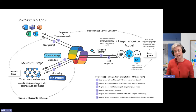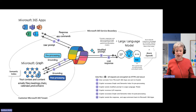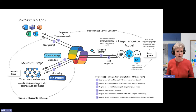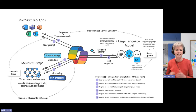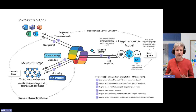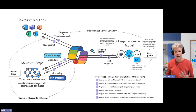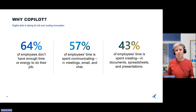If you've used Copilot and seen it think about its response before giving you one, that's all the magical work happening in the background. One important thing to call out on security and compliance: there's a dotted line representing the Microsoft 365 service boundary — staying within your tenant, not sending data or responses back to the large language model, not training it, keeping everything within the confines of your tenant and keeping your data nice and secure.